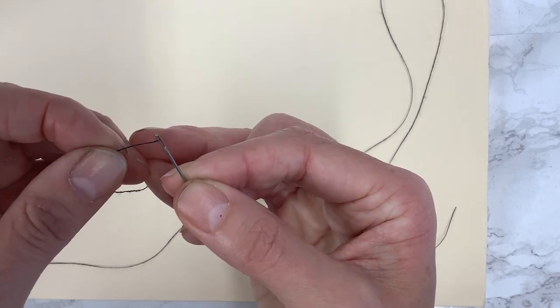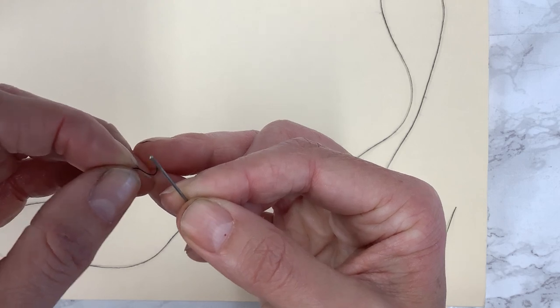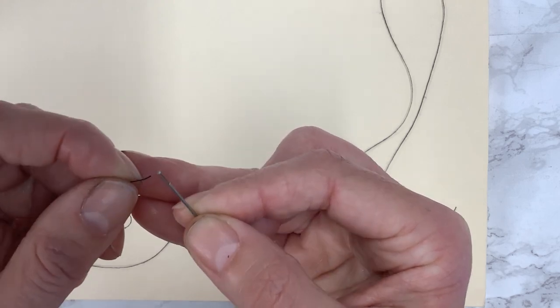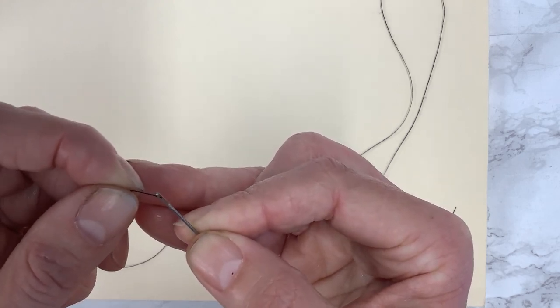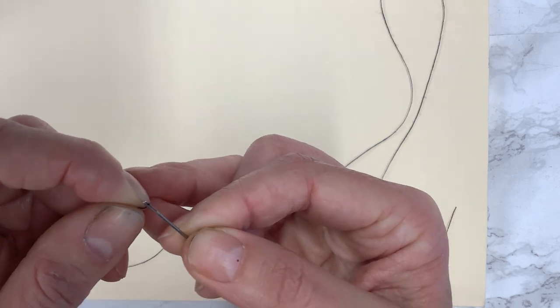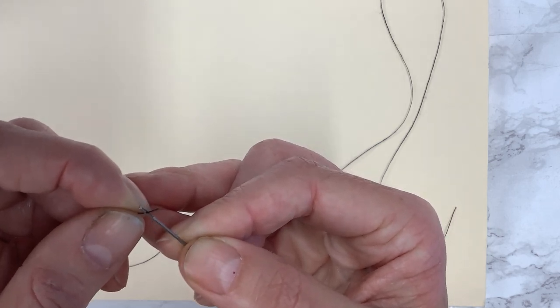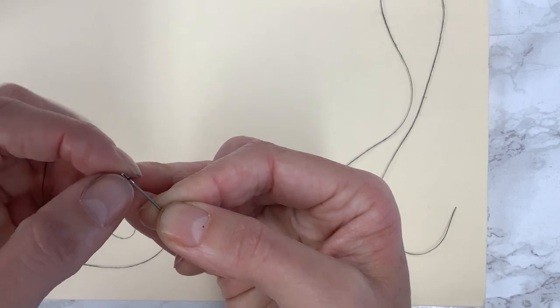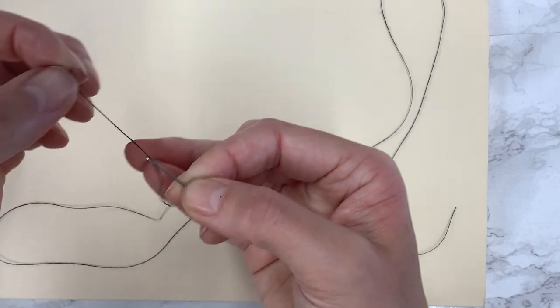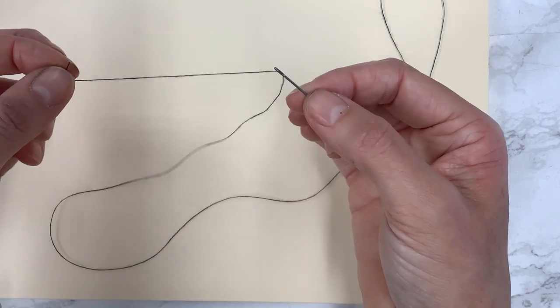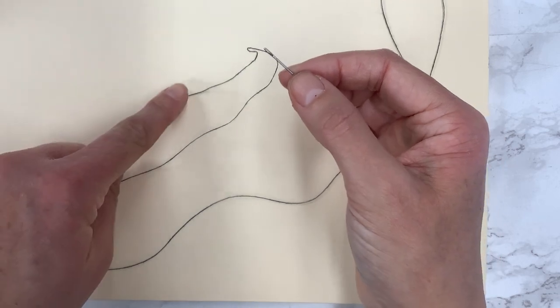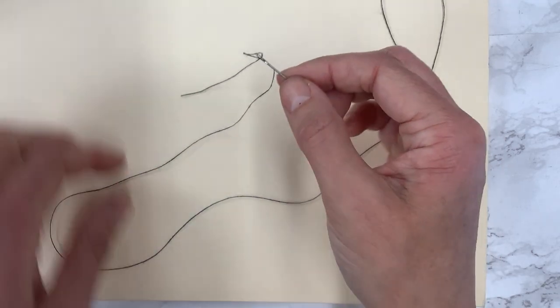So I am going to just kind of gently try to poke it in and you see that it's starting to go. And then I'm going to very carefully pinch from the other side and pull it through so that I have this is called the tail, so I have a little bit of a tail hanging off.